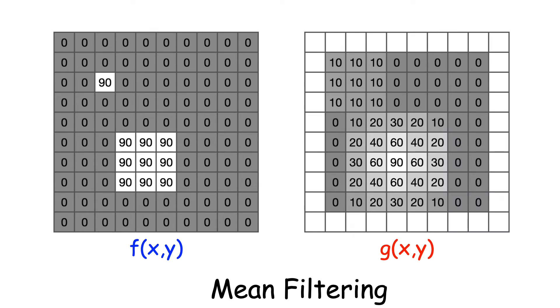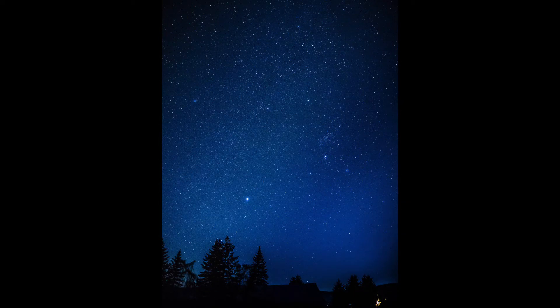One funny thing about mean filtering is it turns bright dots into dim squares. So if you mean filter this starry night image, you get this result. And you can see those squares. That's weird and not very star-like.